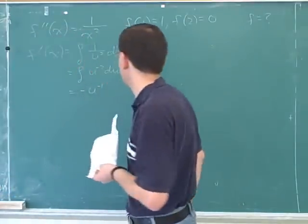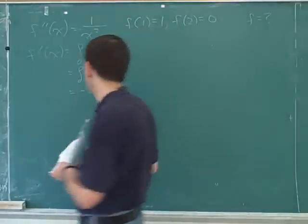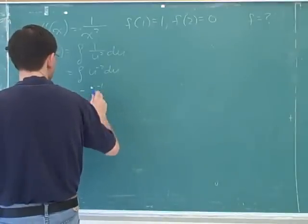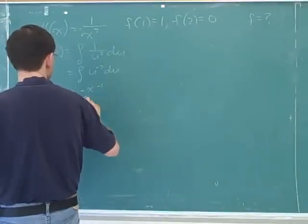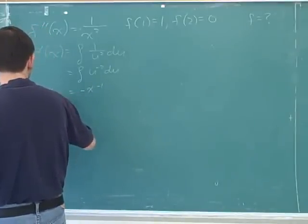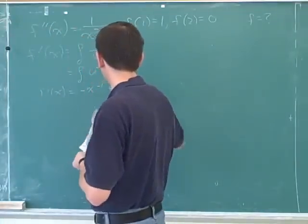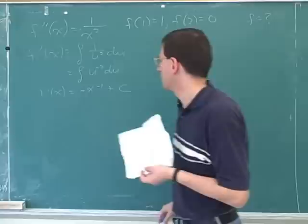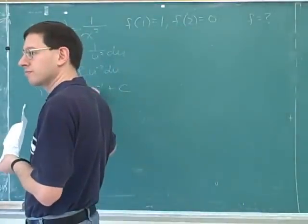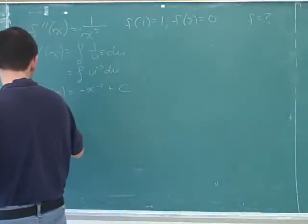Now again, you want to make sure you have the signs right. The first anti-derivative has a negative sign in front of it. And there's a constant of integration, so this would be the first anti-derivative. And then we have the second anti-derivative.